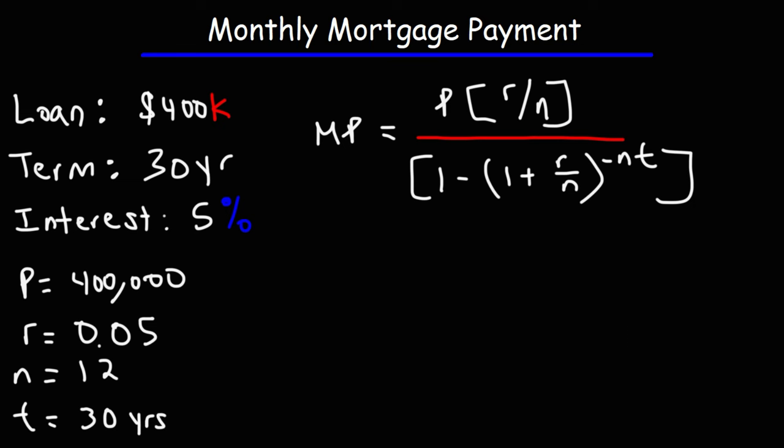Now, all we need to do is plug this information into the formula, and that's going to give us the monthly payment that we have to pay back in 30 years every month to pay this balance off. Let's go ahead and plug this information in and get the monthly payment.